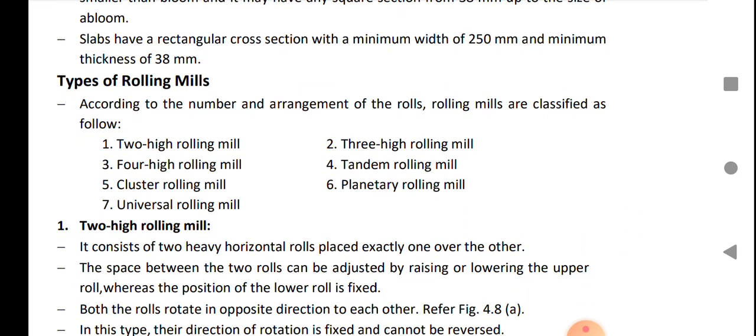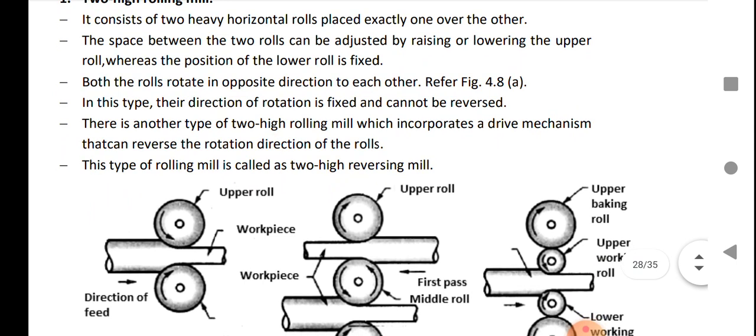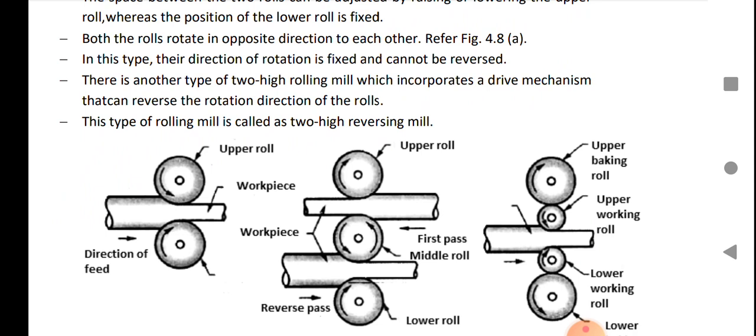Now we talk about types of rolling mills. In two-high rolling mills, we use two rolls. The space between the two rolls is adjustable where the position of lower roll is fixed. Both rolls rotate in opposite directions to each other, because if they rotate in same direction the rolling operation cannot be performed. When the rollers rotate in opposite direction, the slab is continuously forged with the rolls. In this type, the direction of rotation is fixed and cannot be reversed. There is another type of two-high rolling mills which incorporates a drive mechanism that can reverse the rotation direction of the roll. This type of rolling mill is called two-high reversing mills.